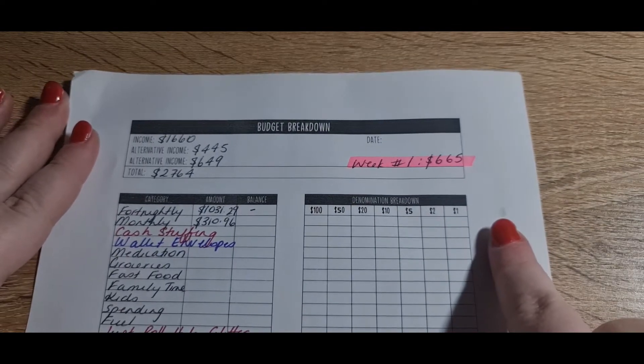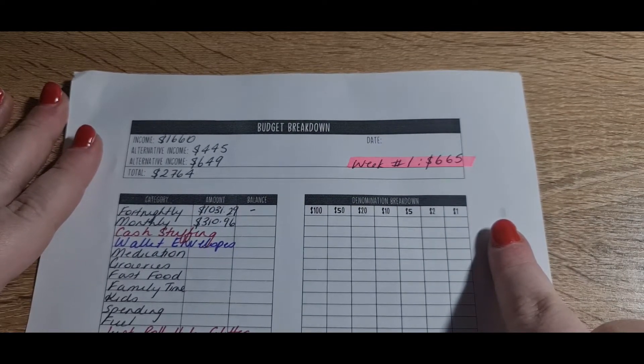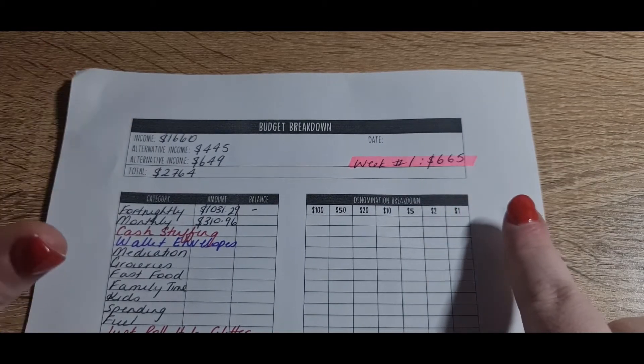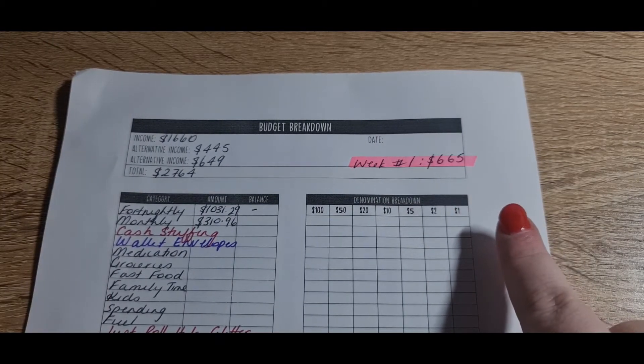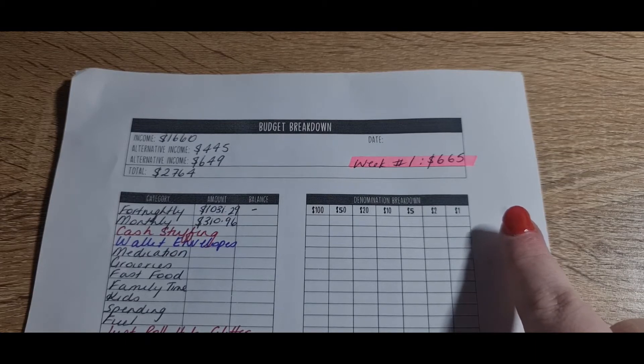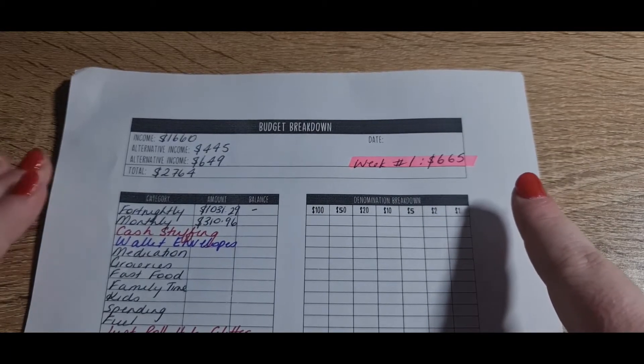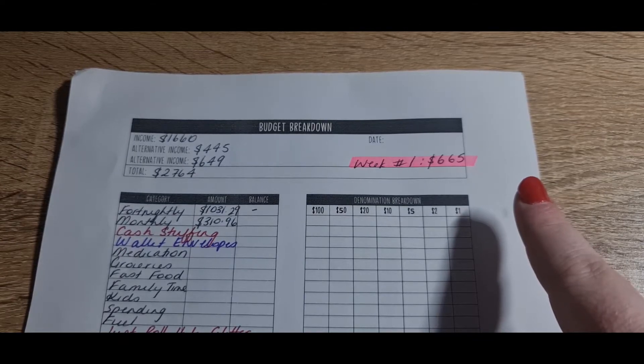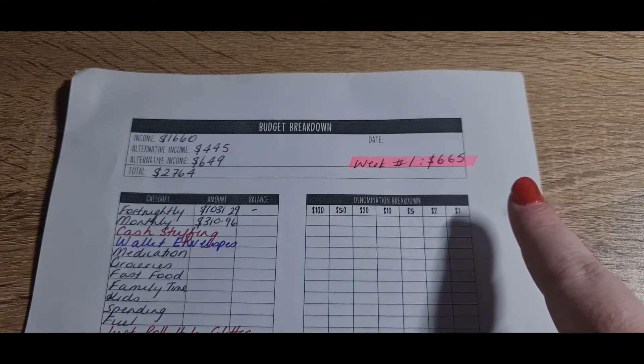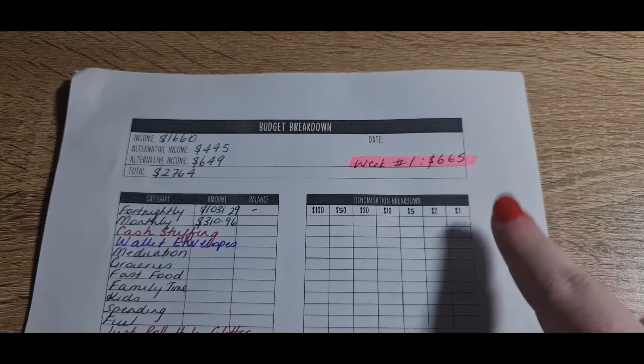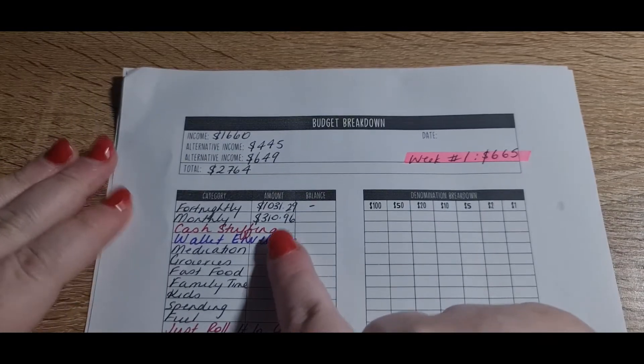So, for example, I'm stuffing $665 this week, but I have $500 sitting in an envelope that I need to transfer from my bank account. I only need to get $165 out in cash. I do it that way because going to the bank is a nightmare for us. It takes a long time, it's hard to get parking, it's just a pain. So I try and only go once a fortnight.